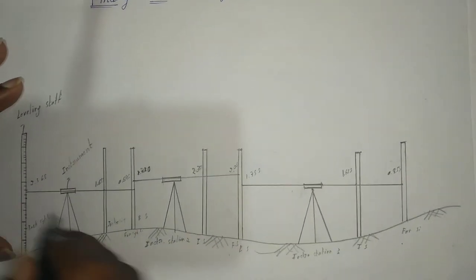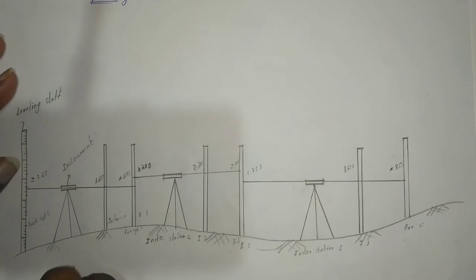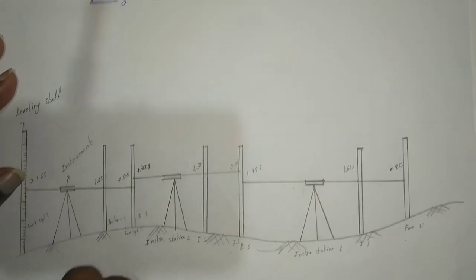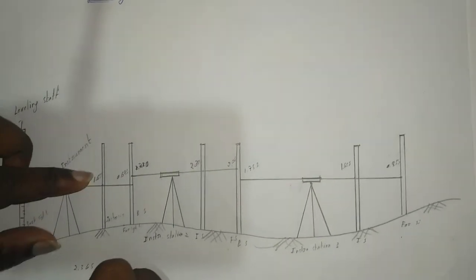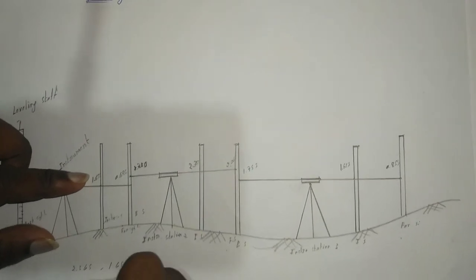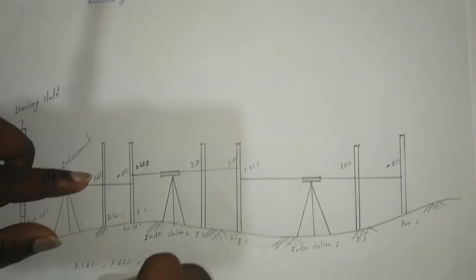And note this readings: our first reading is 2.65, second reading is 1.0155, third one is 0.695.